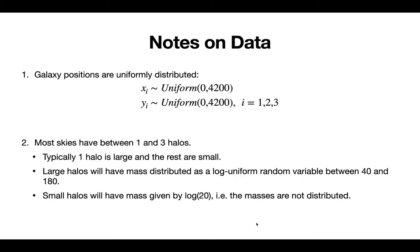So there's a couple notes that we have to make that Tim made on the data, the given data. The first note is that galaxy positions are roughly uniformly distributed, meaning they can be described in the x and y direction as some uniform distribution. The second note to make is that most skies have between one and three halos, and typically one of these halos is very large and two or the rest of the halos are very small.